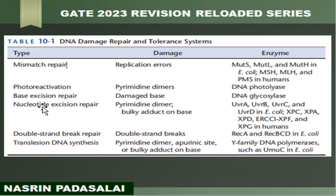Next is double-strand break repair. It corrects double-strand breaks, and the enzymes involved include RecA and RecBCD in the case of E. coli. Next is translesion DNA synthesis (TLS), which corrects pyrimidine dimers and apurinic site-related base damages in DNA. The enzymes involved in TLS DNA synthesis include Y-family DNA polymerases such as UmuC in the case of E. coli.